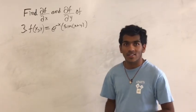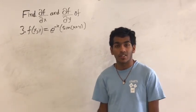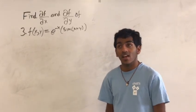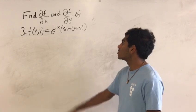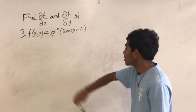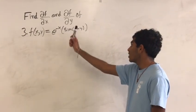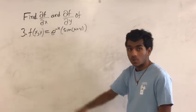Welcome back, guys. This is the third episode of the multivariate series, and now we are just going to be looking at the partial derivative of this function: e raised to the negative x times sine of x plus y.